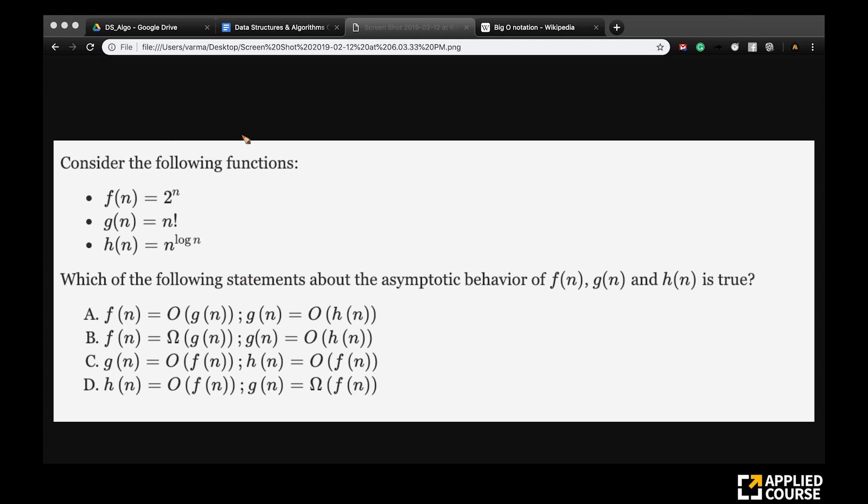Here is an interesting question. Imagine I have three functions: f(n) which is 2^n, g(n) which is n factorial, and h(n) which is n^log(n). Given these three, which of these four statements are correct? This is a multiple choice question with only one of them being correct. Let us look at this. First, let us organize these three functions in an asymptotic order. So let us start with it.